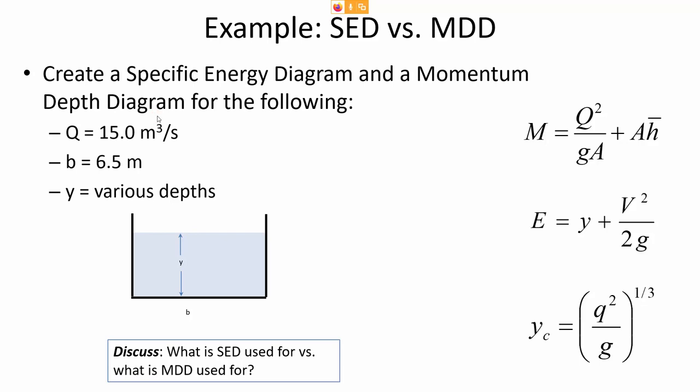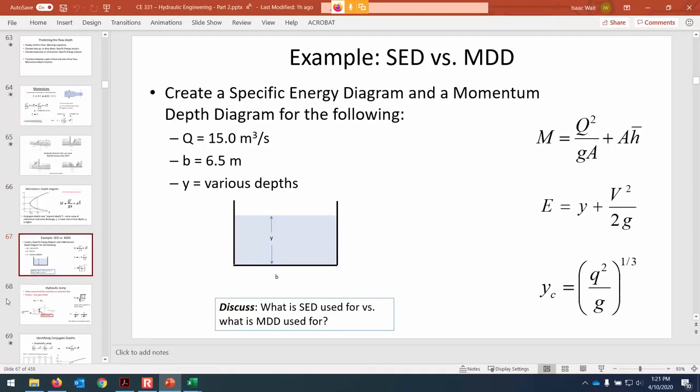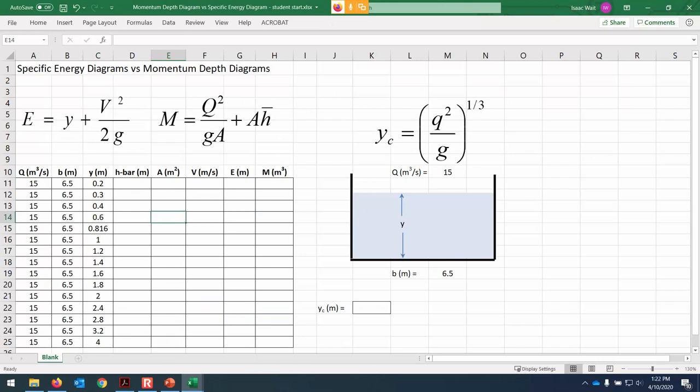We're going to use the Excel file to work through this example. We have a channel that is 6.5 meters wide — a rectangular channel — and we're going to send 15 cubic meters per second through it. There can be a variety of different depths depending on how steep the slope is. We're going to graph both the momentum expression and specific energy to compare and contrast how they're similar and slightly different.